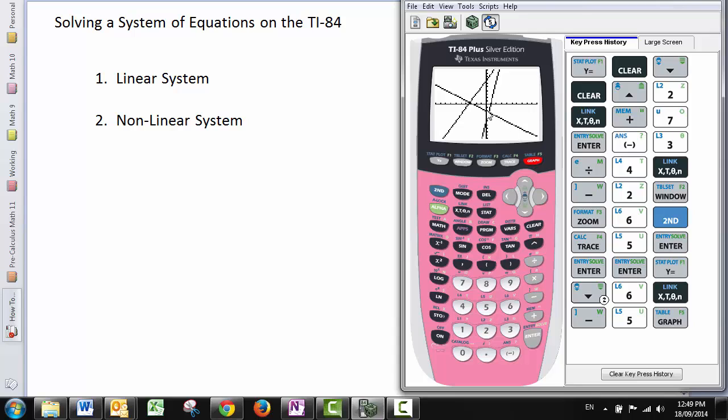And we wanted this intersection point right here between the second and third equations. Then when you go into the intersect settings and it asks for first curve, we don't want y1 as the first curve. So now you use the down arrow.